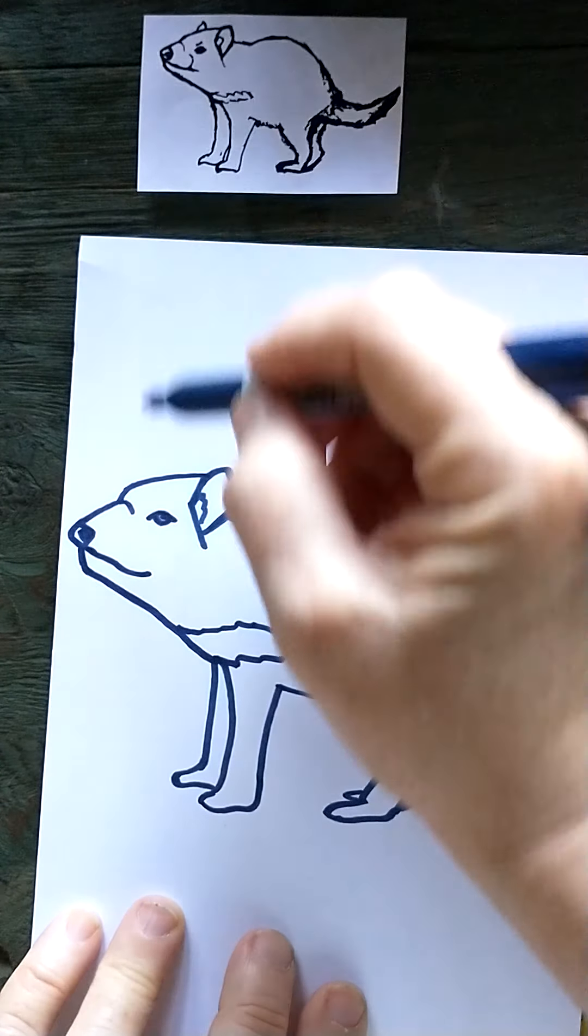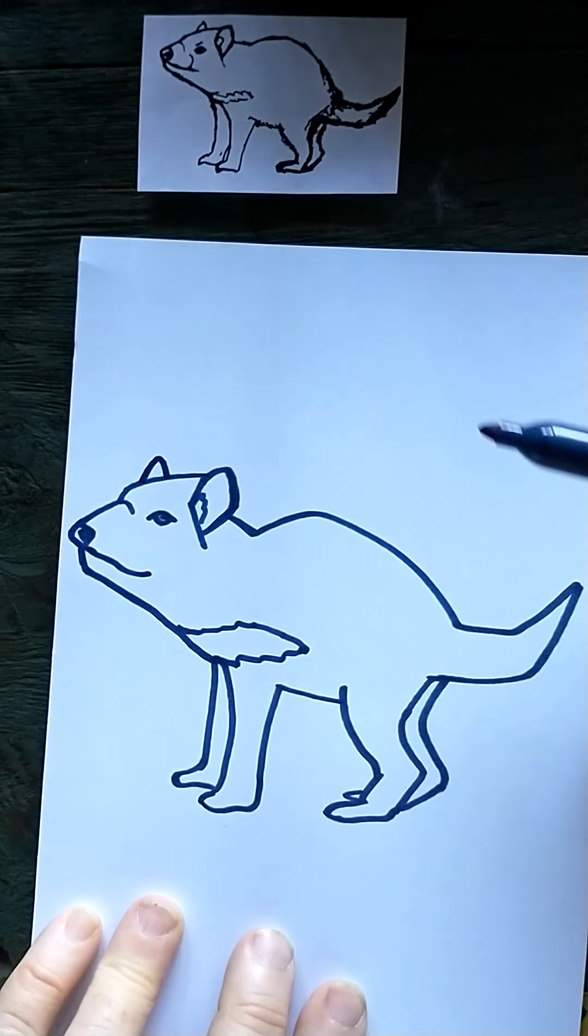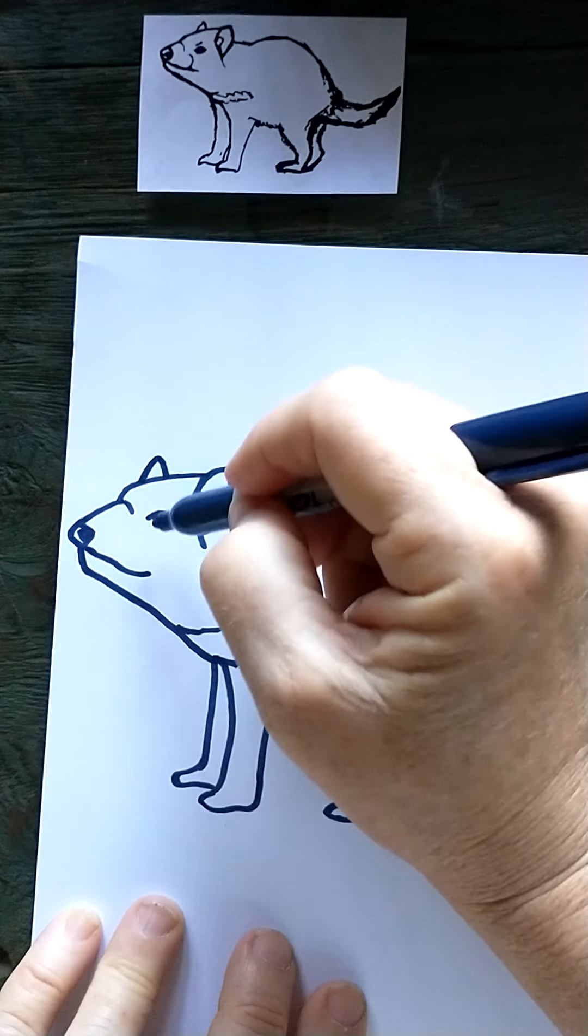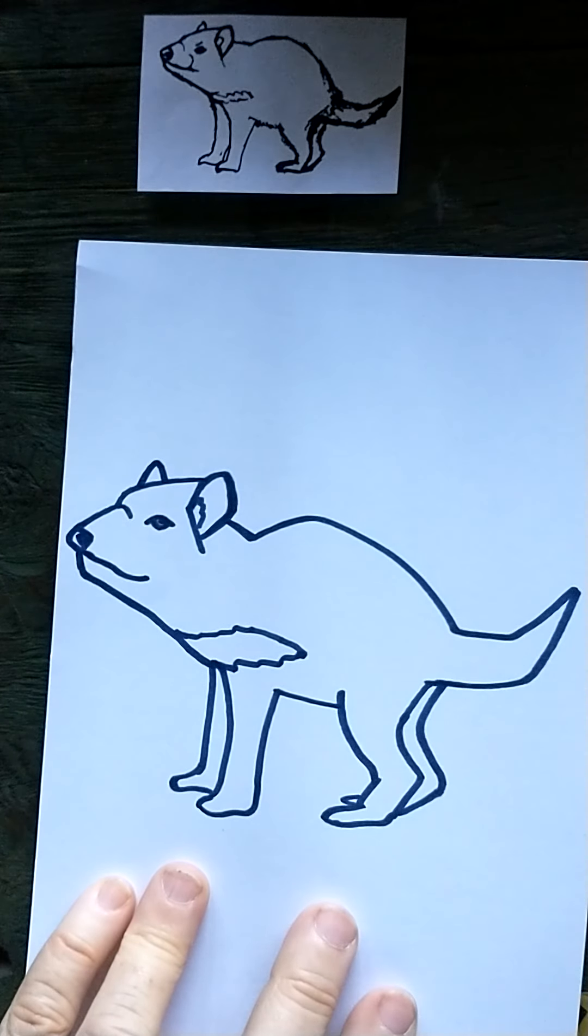I'm going to give him an ear on the other side of his head. It's about the same level as the eye showing up on the other side. And there's my Tasmanian devil.